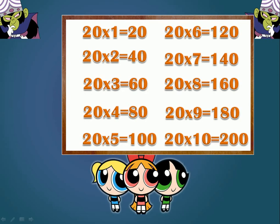2 times 1 is 20. 2 times 2 is 40. 2 times 3 is 60. 2 times 4 is 80. 2 times 5 is 100.